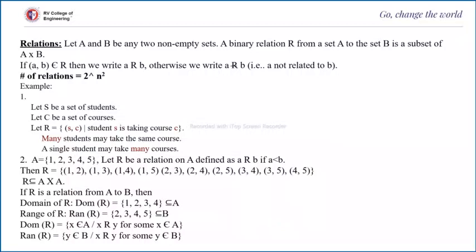For example, let S be the set of students and C the set of courses. R is a relation where a student takes a course. Many students may take the same course and a single student may take many courses. The number of relations can be an empty relation, a complete relation, or any subset of S×C. Second example: let A = {1, 2, 3, 4, 5} and R be a relation on A defined as a is related to b if a < b. Here R is a relation on A, meaning it is a subset of A×A.